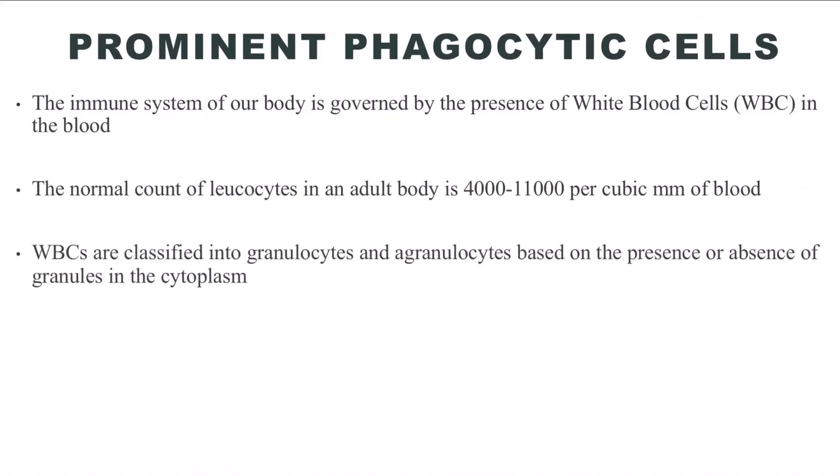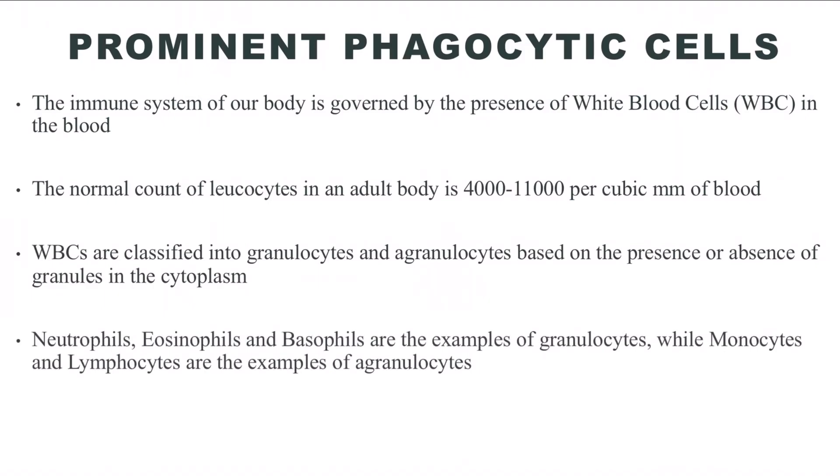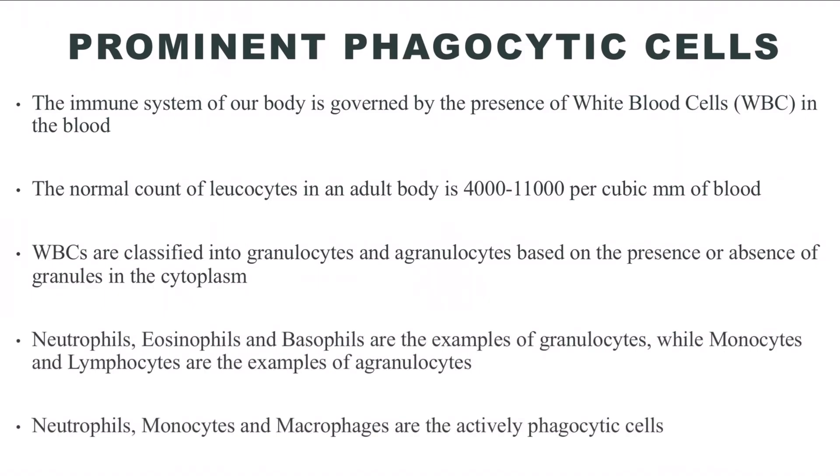The white blood cells in the blood of a normal human approximate to a range of 4,000 to 11,000 per cubic millimeter. The numbers may fluctuate in antigen attack. Leukocytes are broadly of two classes, namely granulocytes and agranulocytes. Granulocytes include neutrophils, basophils, and eosinophils, while agranulocytes include lymphocytes and monocytes. Out of these, neutrophils and monocytes are actively phagocytic cells.